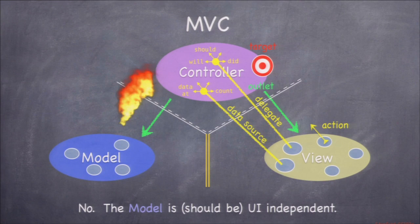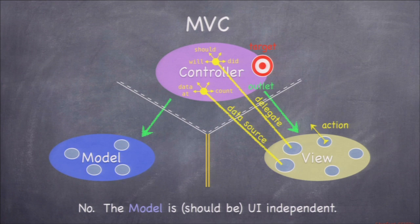The controller's job is to interpret and format the model data for the view. Can the model talk to the controller? Obviously that's forbidden because the model knows nothing about UI. But sometimes things change in the model and the controller needs to know about it — data changes, or the model is some network database and something changes on the network.